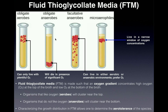The top of the broth is going to be an aerobic environment. Aerobic means high in oxygen — like the environment you're sitting in right now. There's plenty of oxygen because we are aerobic creatures. Usually about the top third of the tube is going to be aerobic.